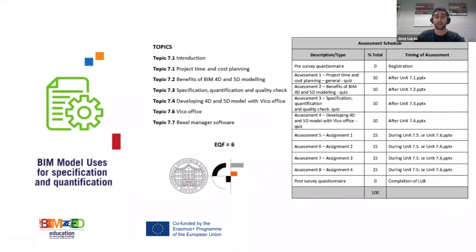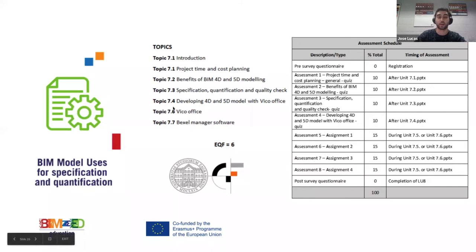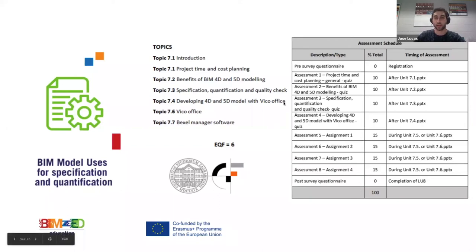Learning unit 7 is about using BIM models to extract information — specifically specification and quantification. We are talking about BIM 4D and 5D: time and cost, planning and budgeting of a building. It explains various software tools, how to structure a model to extract that information, and includes assignments and tests for different models.